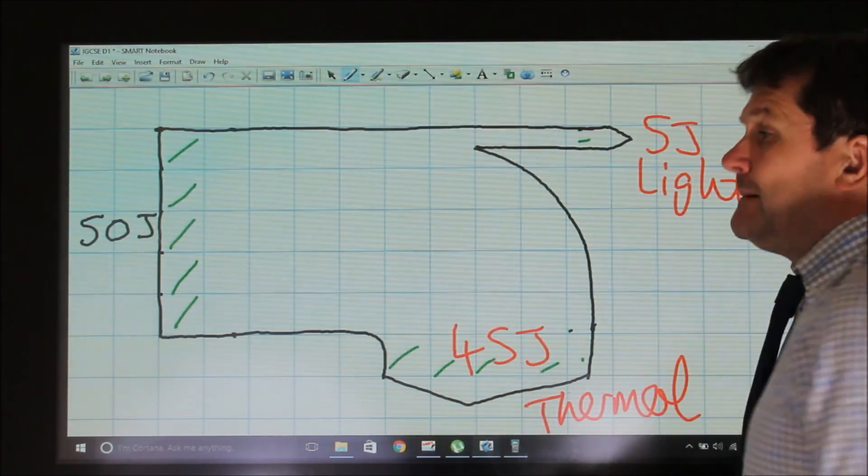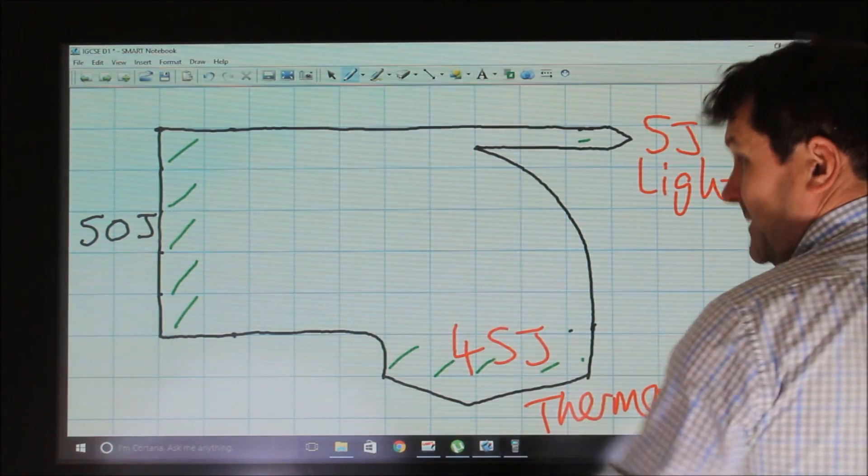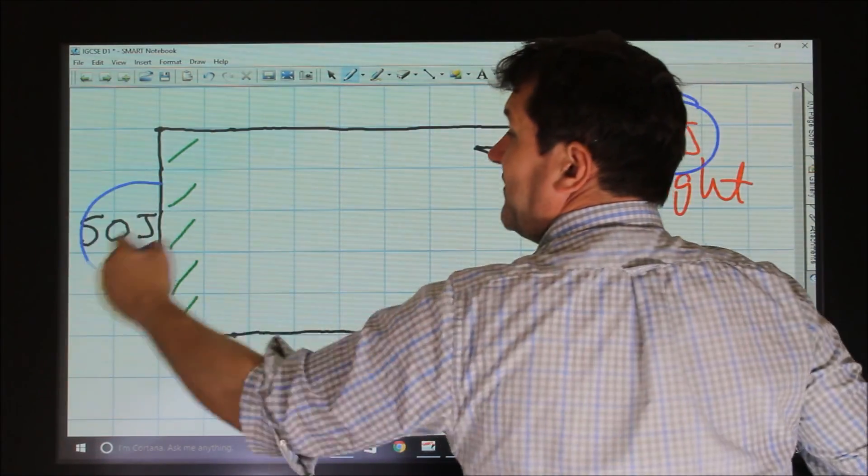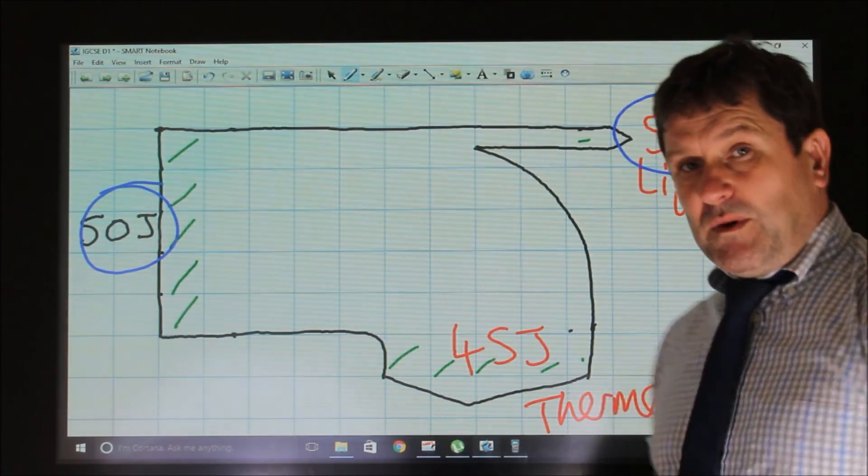we can see that this adds up to 50 the same as that. And from a Sankey diagram, we could work out the efficiency by seeing that it's 5 divided by 50, which is 0.1.